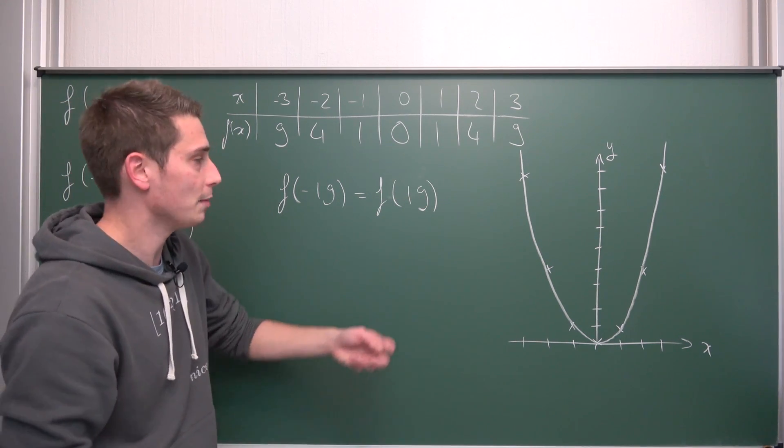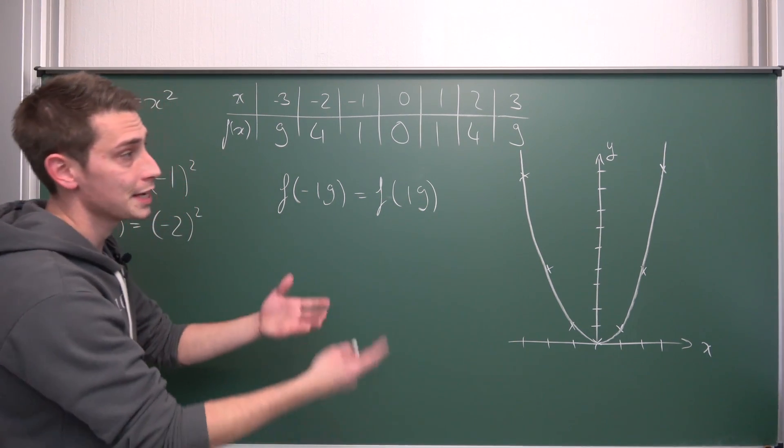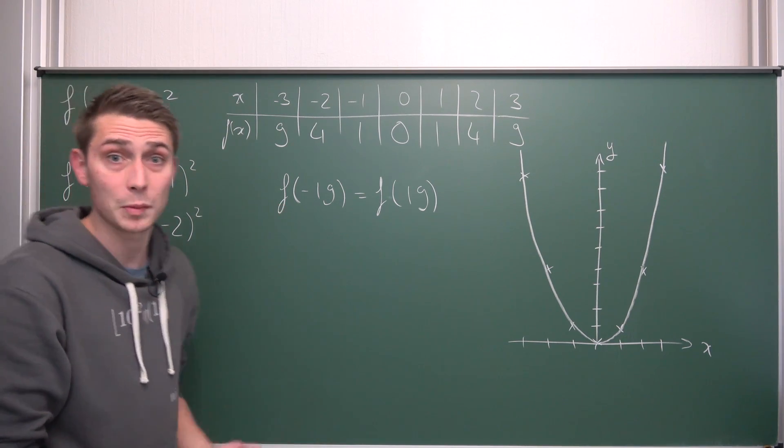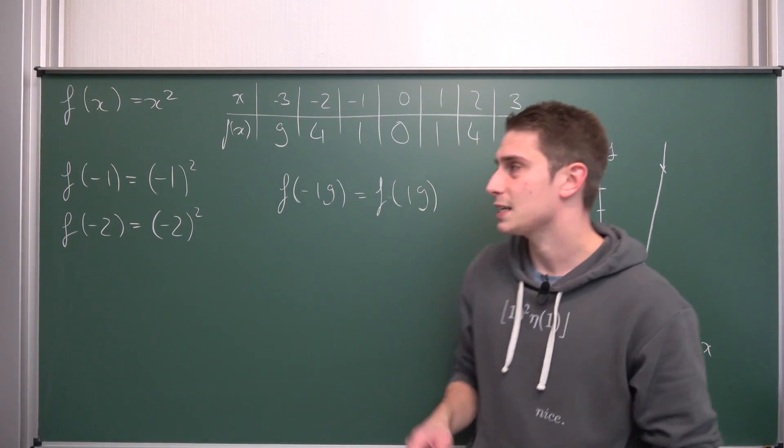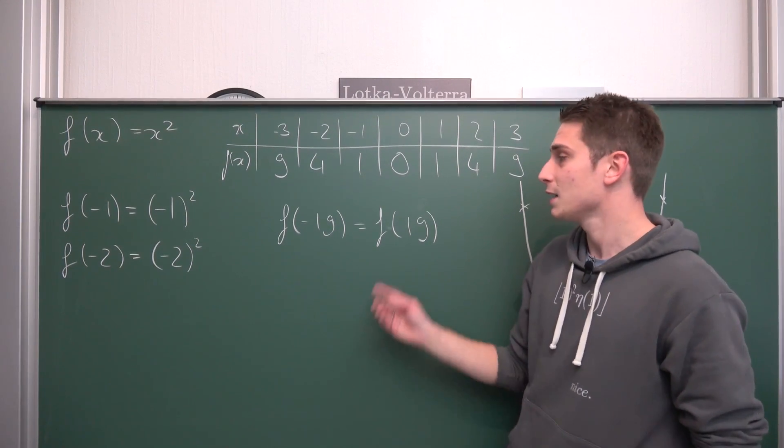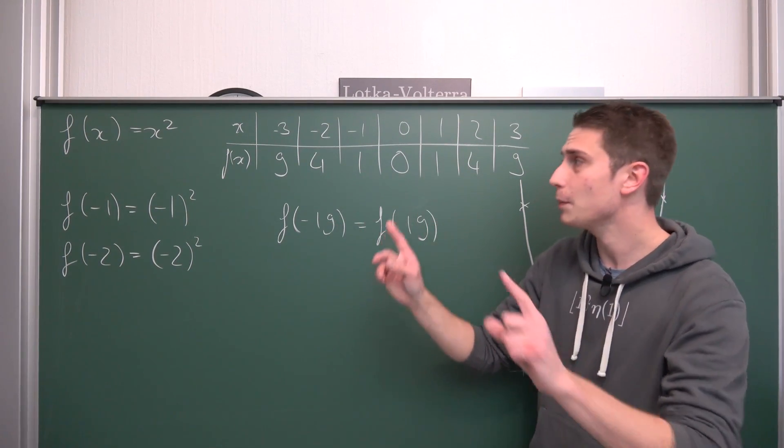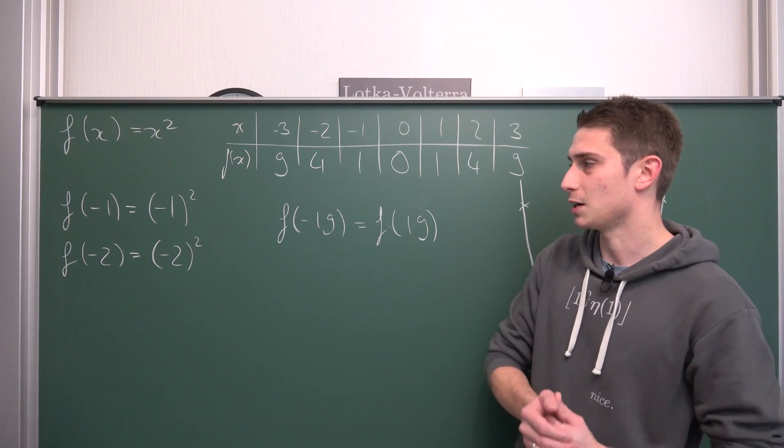So if you don't like negative numbers, you can just go for the positive values. This does work out for the normal parabola. Later, we are going to see that there can be kind of some restrictions. This doesn't always hold, but for the normal parabola, it does hold. So just keep this in mind.